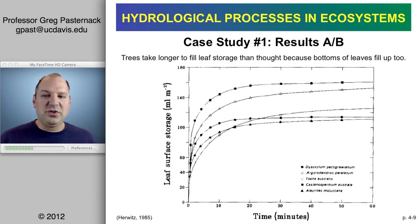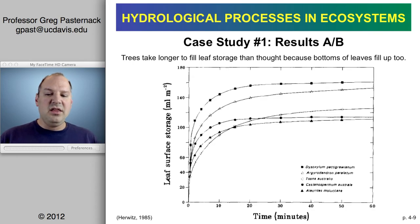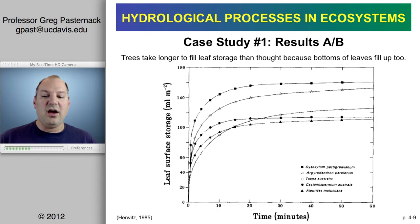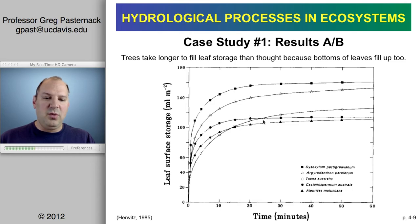Looking at the first results: on the x-axis is time; on the y-axis is leaf surface storage in milliliters of water per square meter of tree for the leaves. In the first 20 minutes, water is accumulating in the tree. Around 20 minutes the rate starts to drop off. In only one case — the round line — does it really flatten out; the others continue to accumulate water, because water can go under the leaf and accumulate on the underside as well, a process that begins later in the accumulation stage.